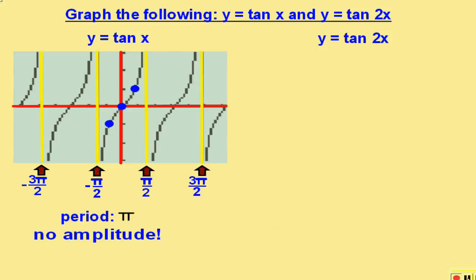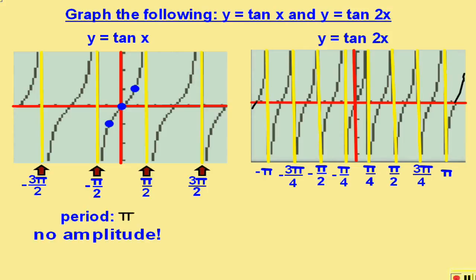Now, comparing the tangent curve with the tangent 2x curve, we see the following. In the same interval, the number of asymptotes has doubled, and the interval for period changed from pi to pi over 2.